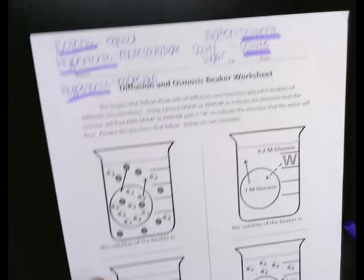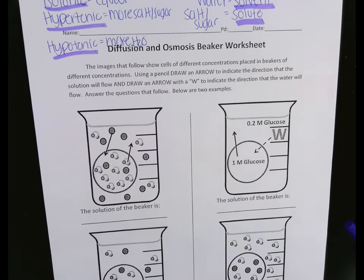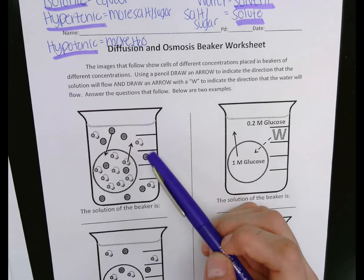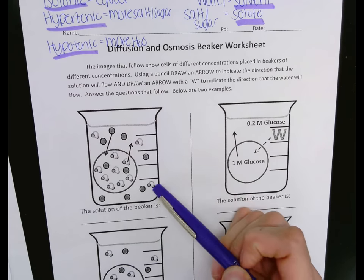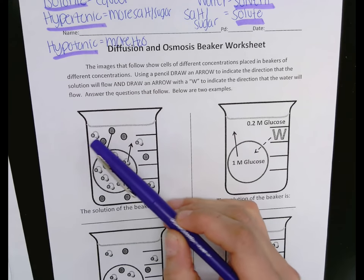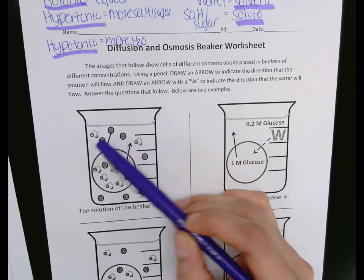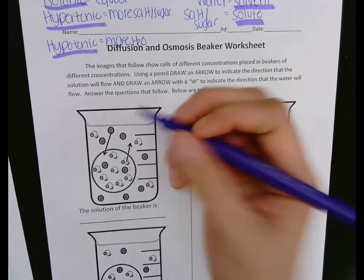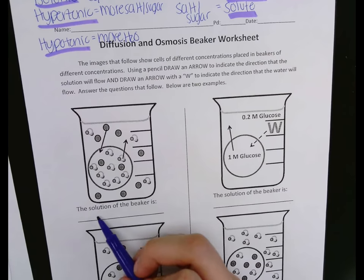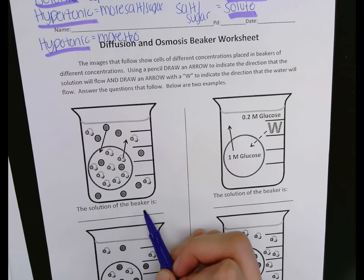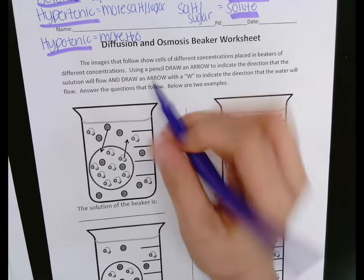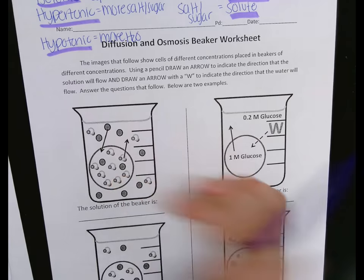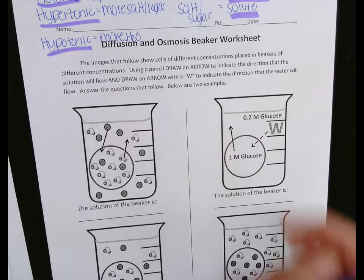So going through this, we are going to be looking at various different beakers. These little guys represent the water molecules — that's why there are two hydrogens on either side and oxygen. This represents the solute or the salt or sugar. And it's going to ask you what is the solution of the beaker, or it's going to ask you about the cell. The beaker is this area around the cell; the cell is the thing that looks like a cell in the middle of the whole beaker.